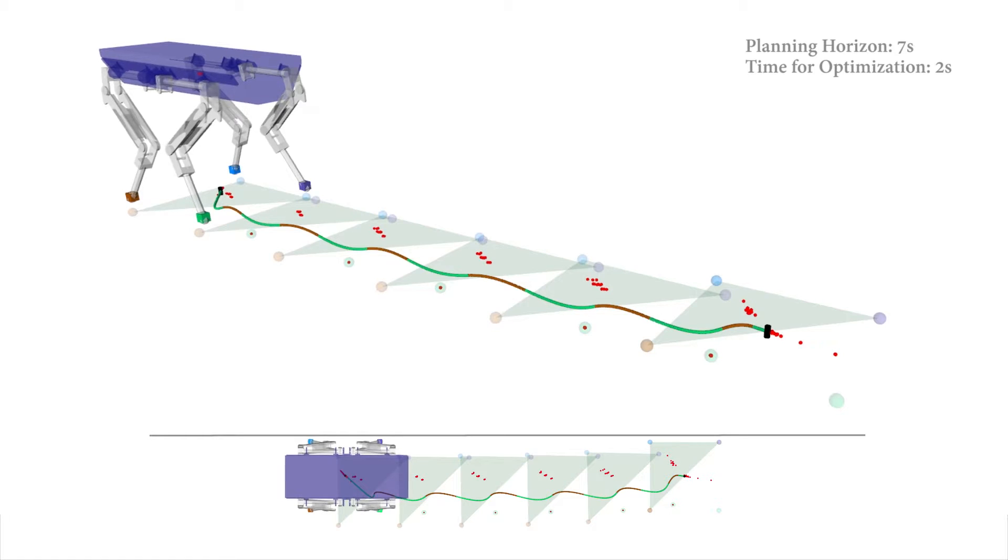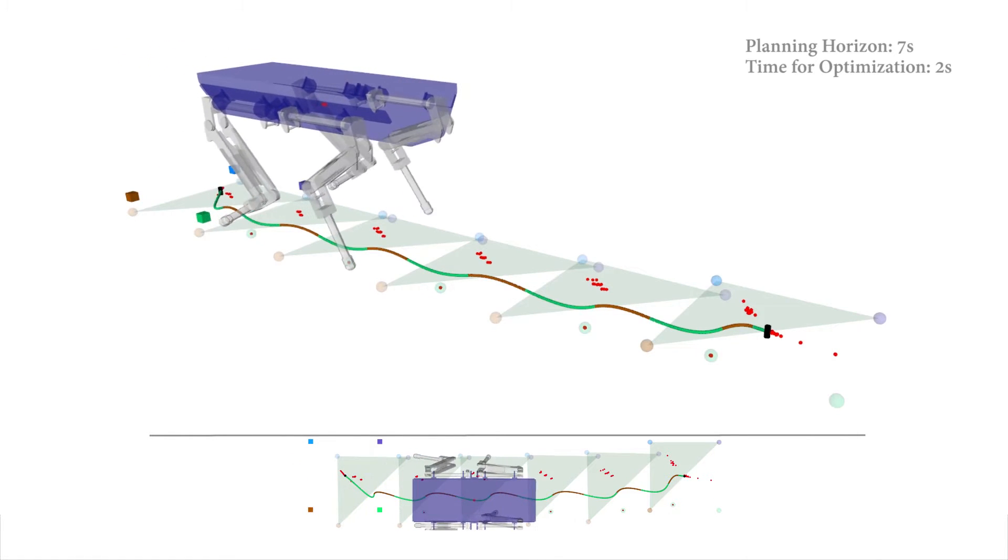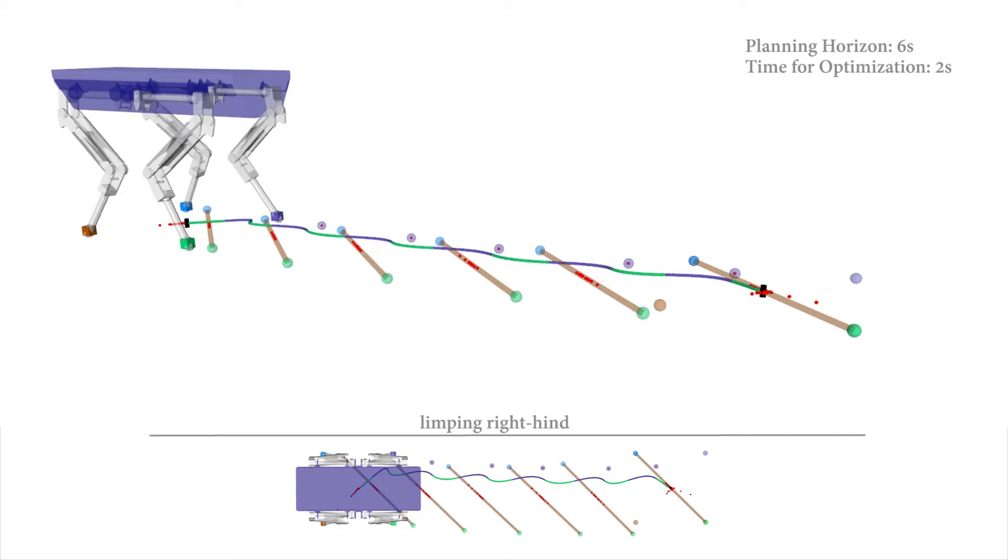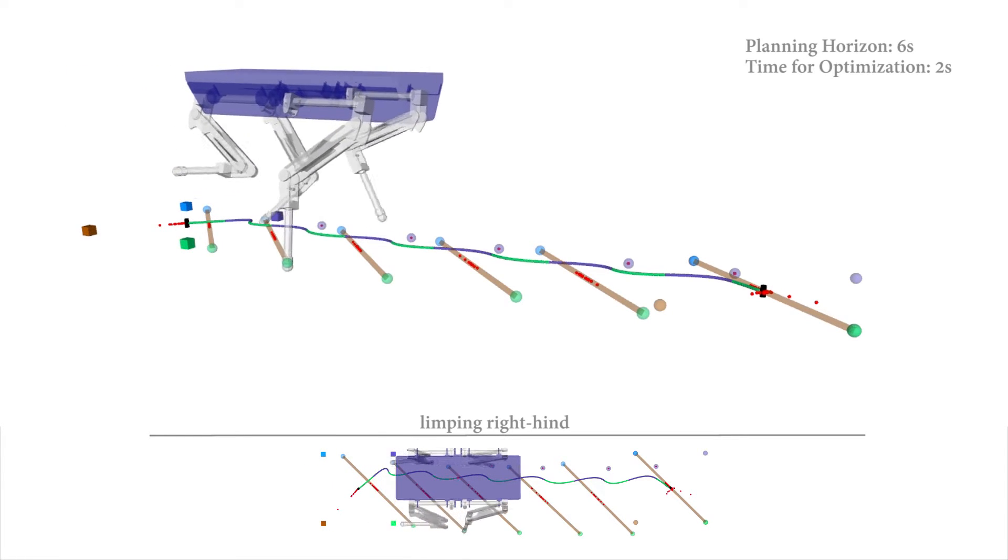By allowing only one leg in contact at a specific time, motions with support points can also be generated. This is a very restricted state as the red center of pressure must lie exactly inside the foothold, fully determining the dynamics.